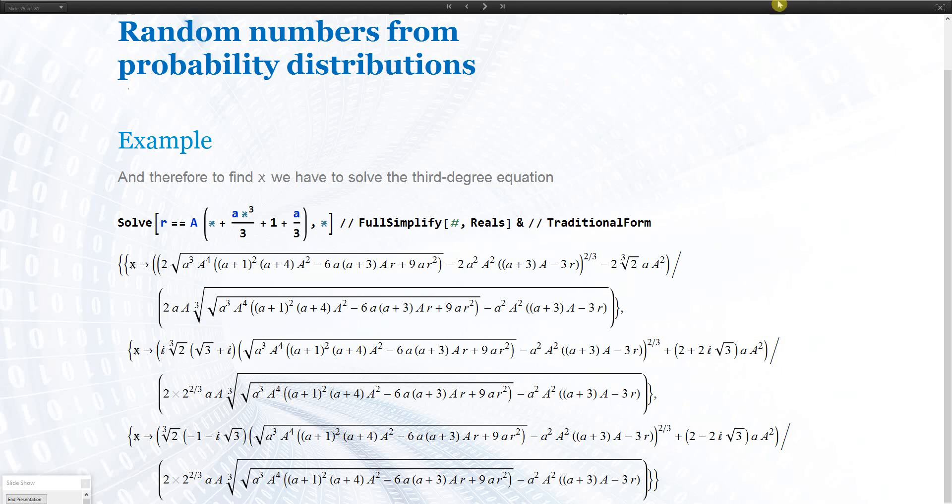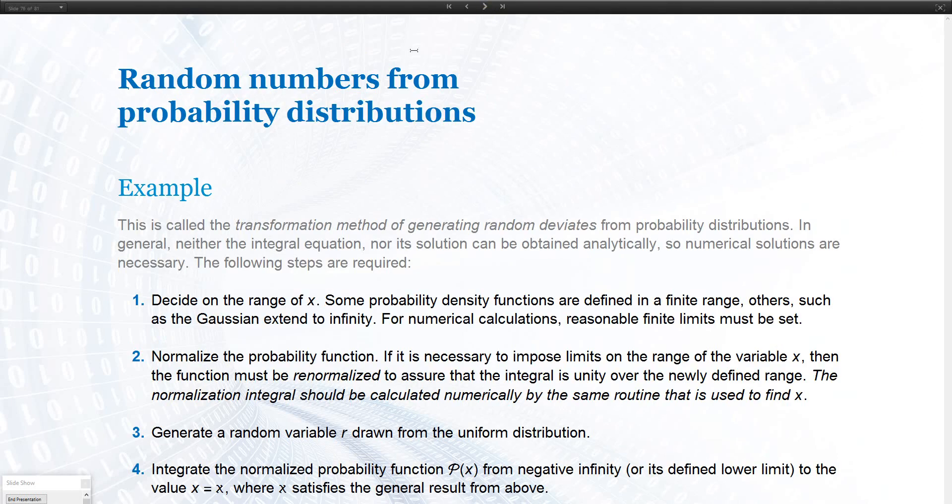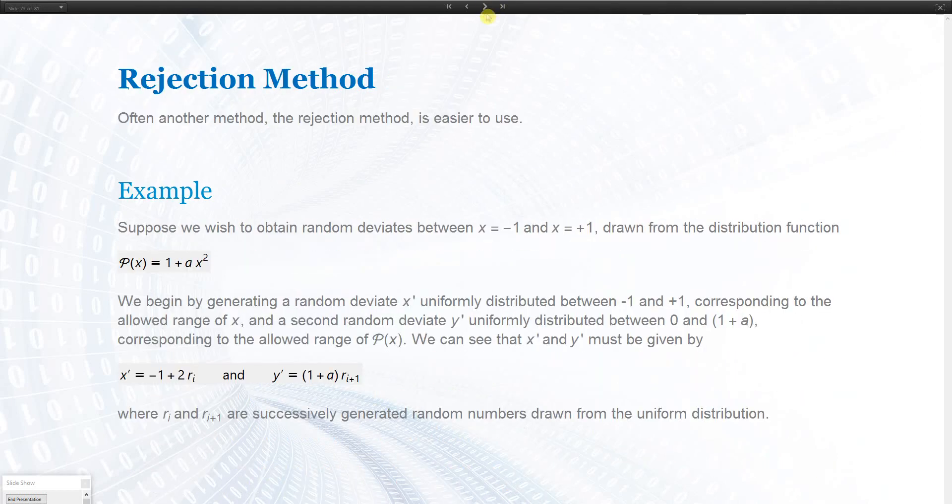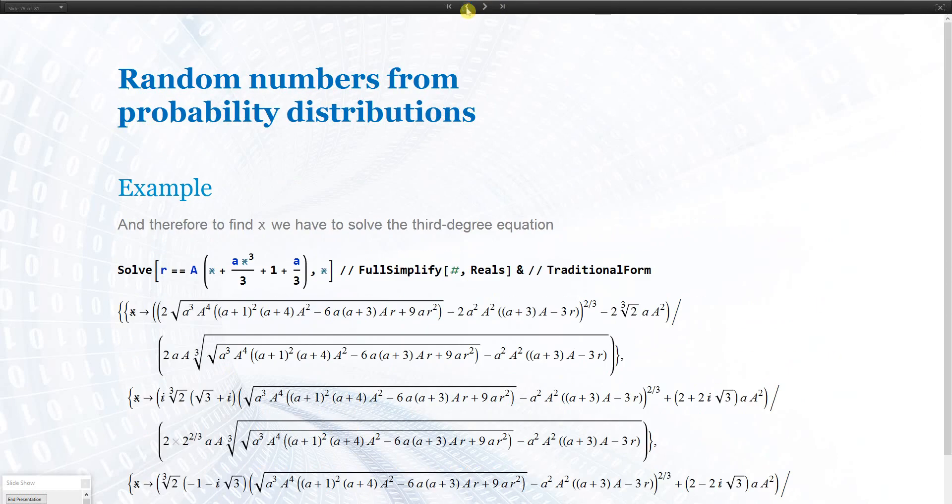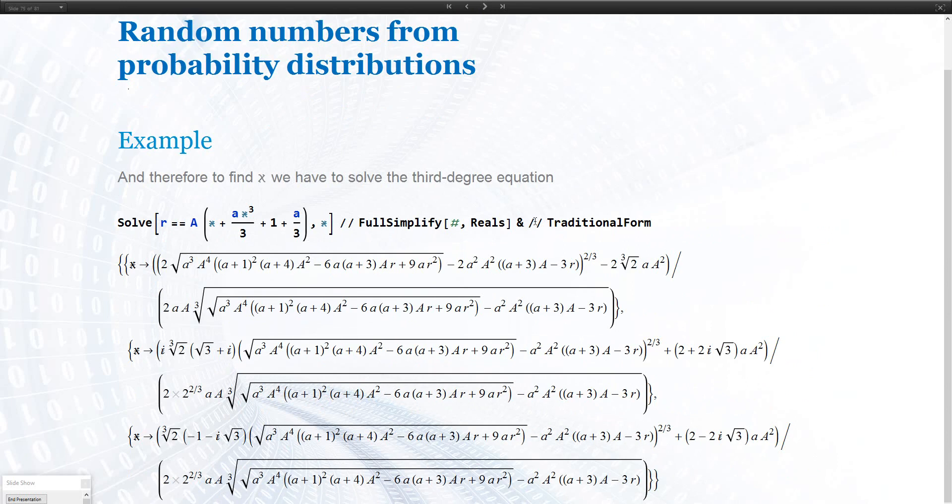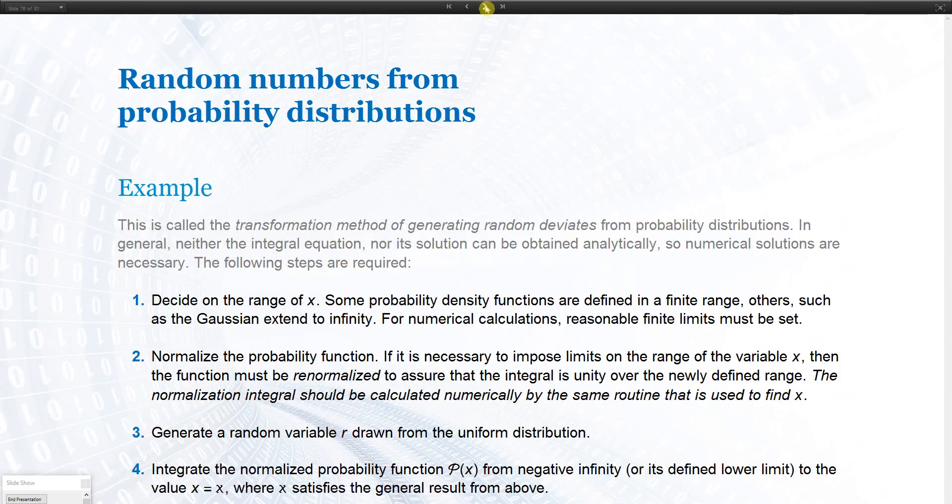And the result will look, I don't have it here. And the x's will be distributed according to our wanted distribution. This is called transformation method.